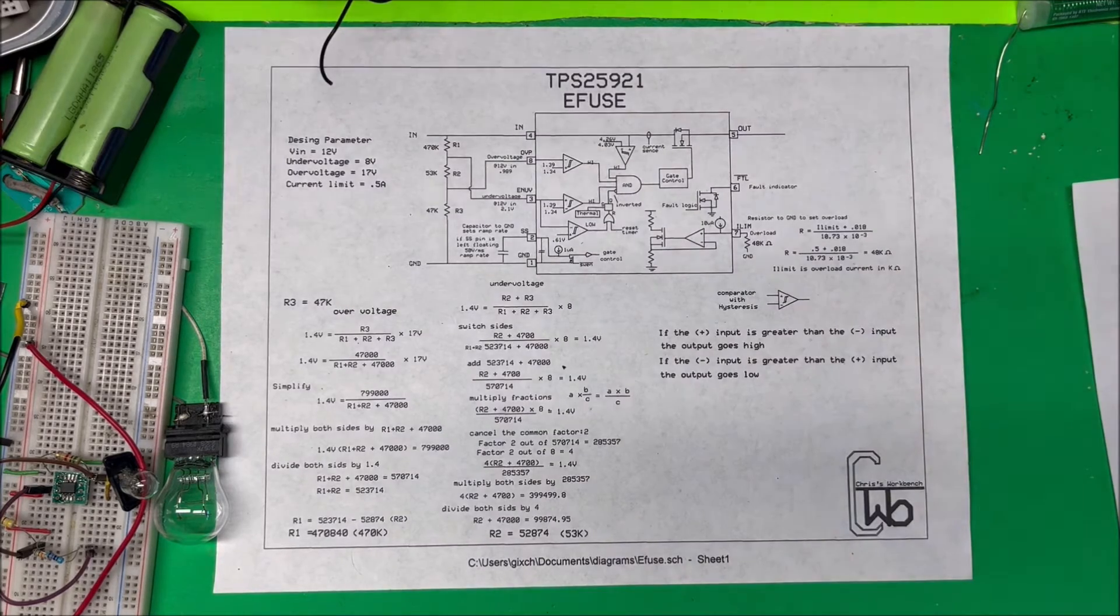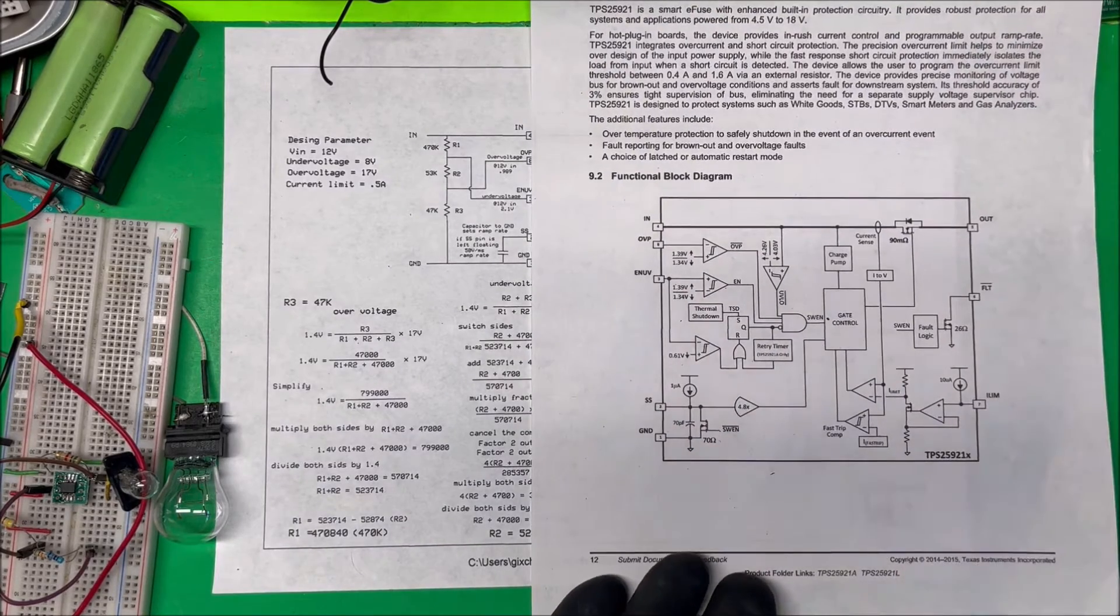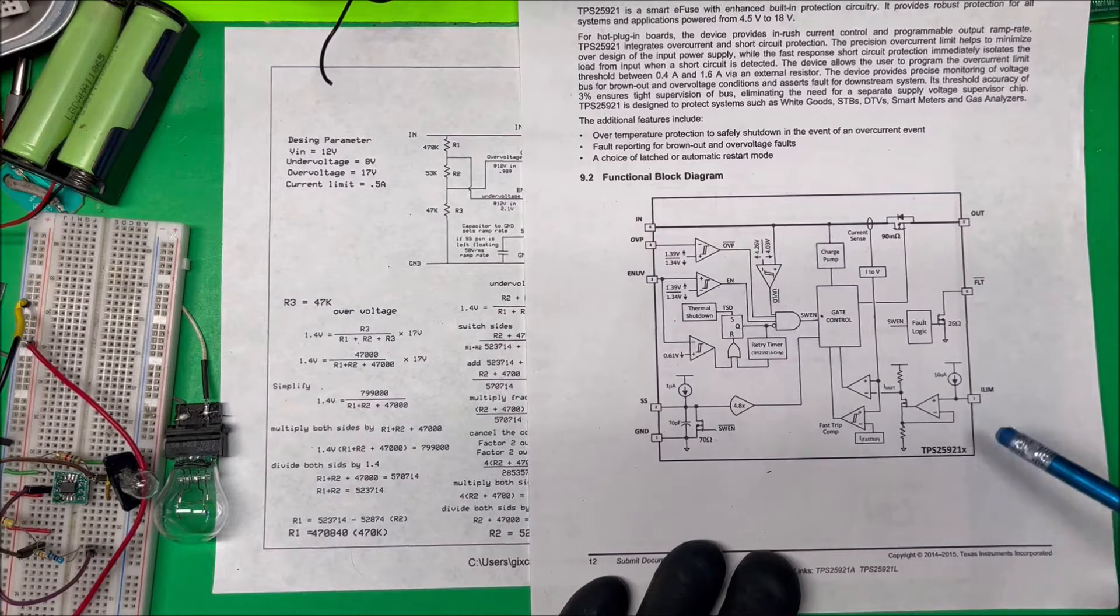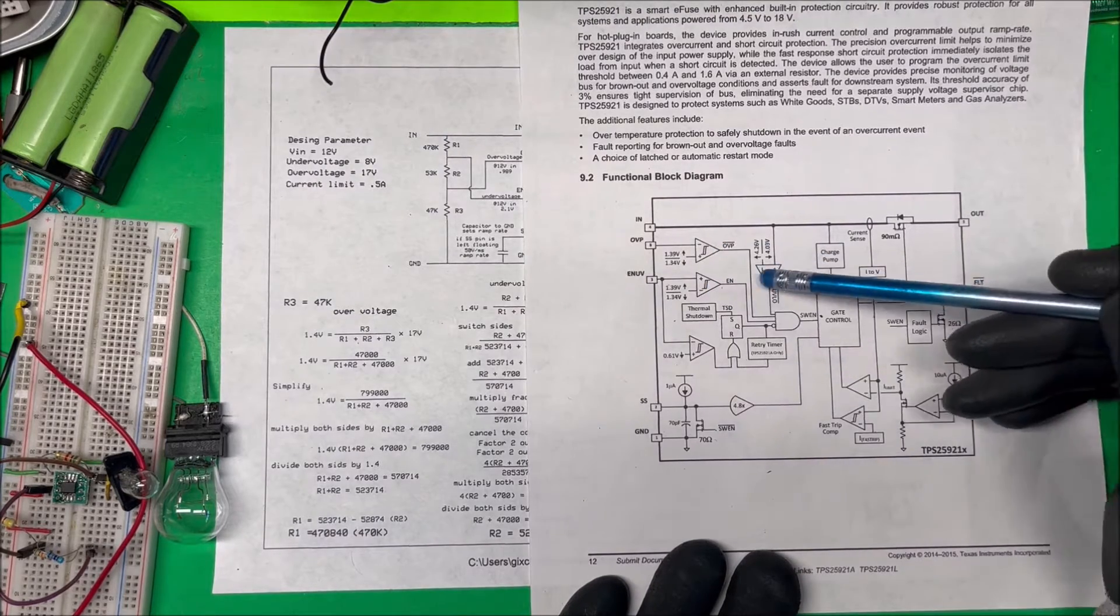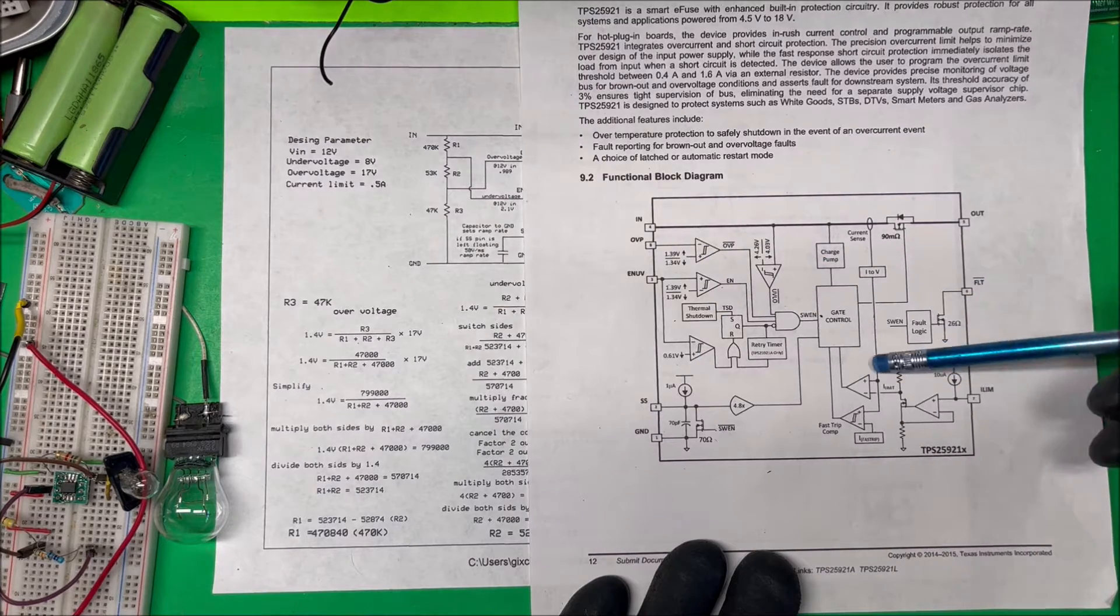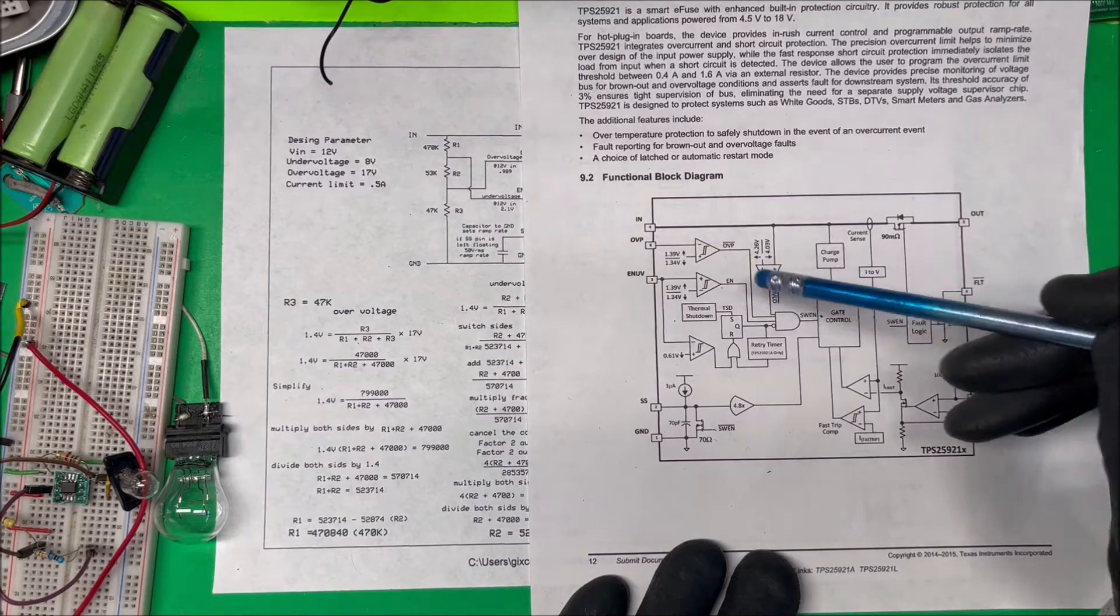Let's look at this diagram, which is a little bit bigger and might be easier to look at. They have these comparators and these happen to have hysteresis in them - one, two, three, four, five, six, seven of them.